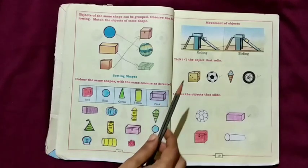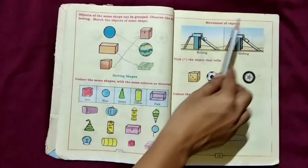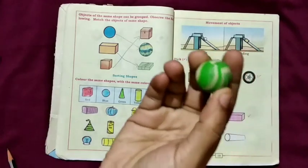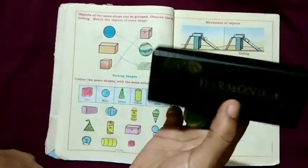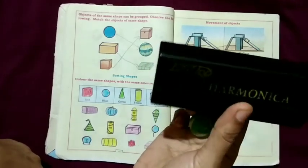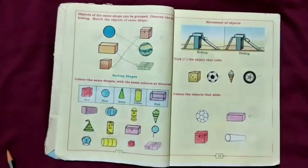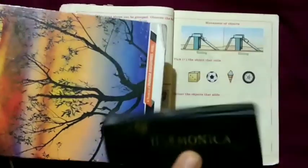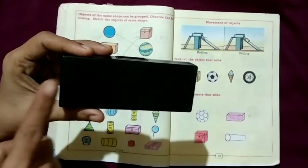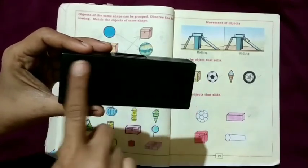Now we are going to learn about movement of objects. This is a ball. This is a rectangular box, that is cuboid. We will see how the objects will move. This cuboid is sliding. Why is the cuboid sliding? Because the cuboid has a flat surface.